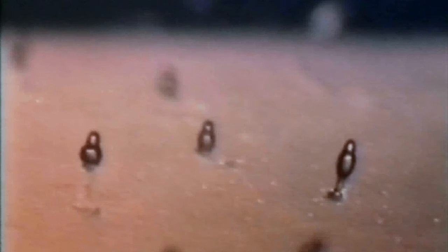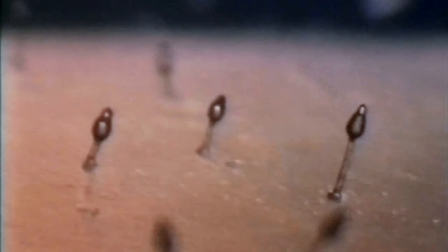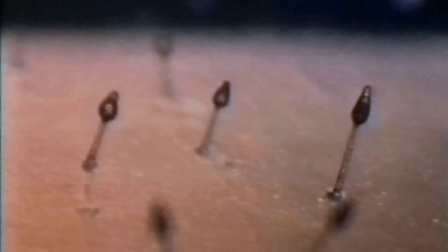But of course, Dictyostelium need to be able to tell who kin are, and they do so by using immunoglobulin-like proteins which protrude out of their membranes. These act like little badges, which tell other Dictyostelium what kind of strain they are. Different strains of Dictyostelium produce different badges.